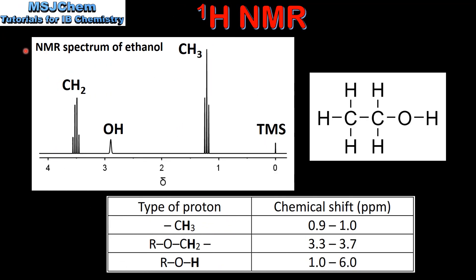Next we look at the NMR spectrum of ethanol. On this spectrum we have three peaks. The first peak corresponds to a CH3 group, the second to an OH group, and the third to a CH2 group. If we look at the structural formula for ethanol we can see it's composed of a CH3, a CH2, and an OH group.